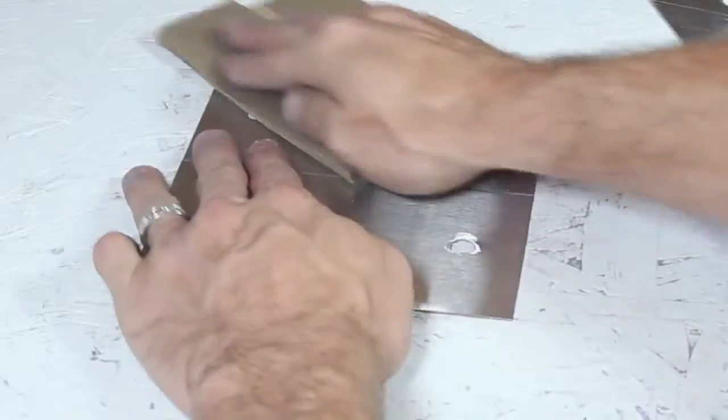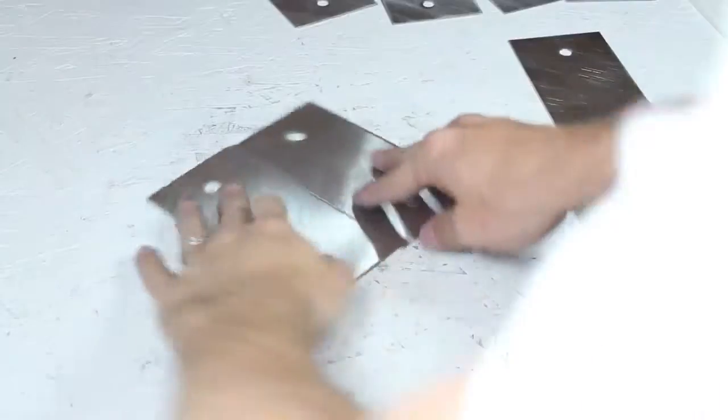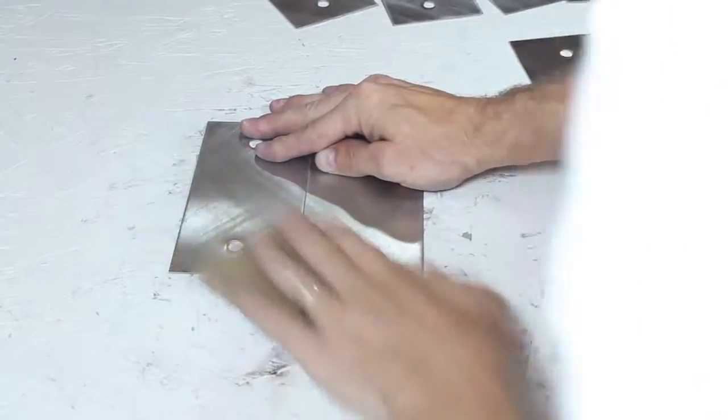Instead we'll need to hunt down some sandpaper. This is 100 grit and I'll place two plates in a diamond shape and sand them from top to bottom, then rotate 90 degrees and repeat. These scuff marks will increase the surface area on the plates and increase the efficiency of the generator.